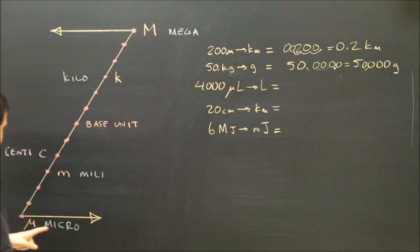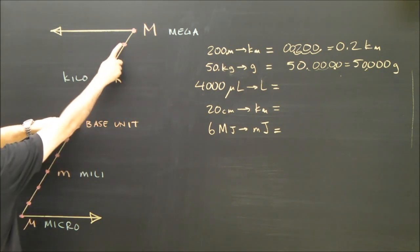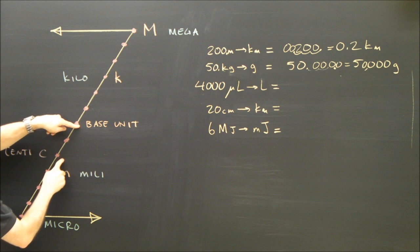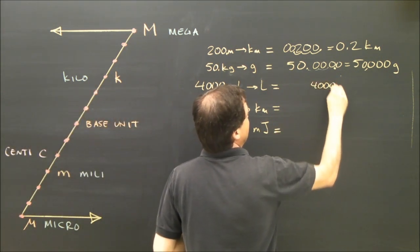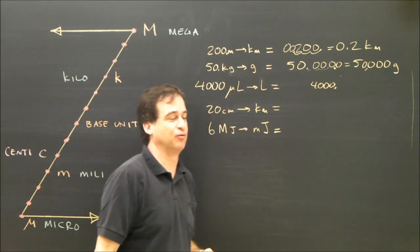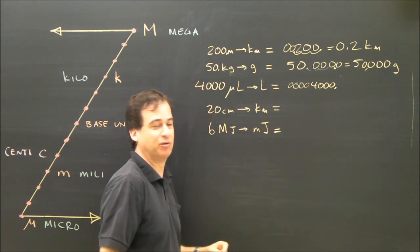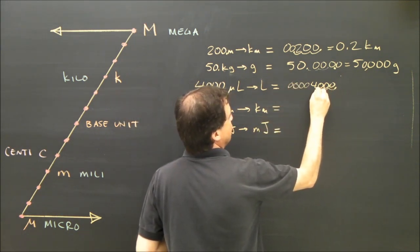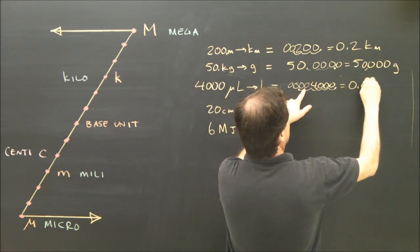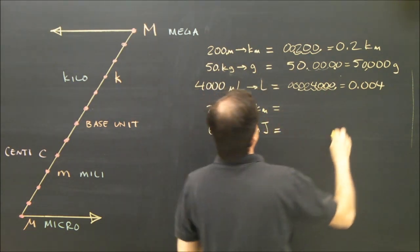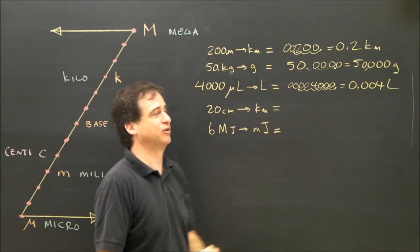Let's look at microliters to liters. Micro to the base unit liters — I'm going up, so the decimal moves to the left. Counting up from micro to the base unit is six steps, so I move the decimal six places to the left. Starting with 4,000, moving six to the left gives 0.004. So 4,000 microliters is 0.004 liters.